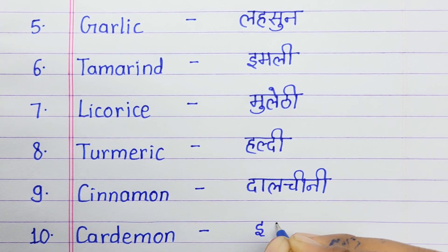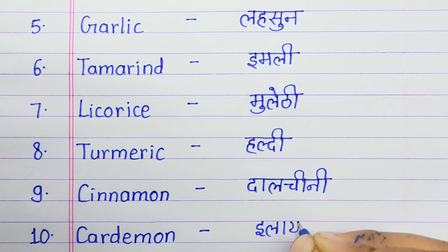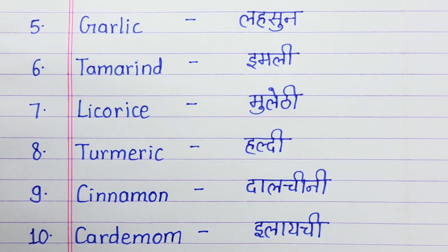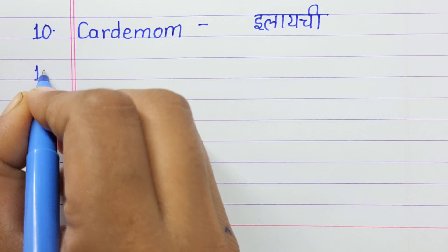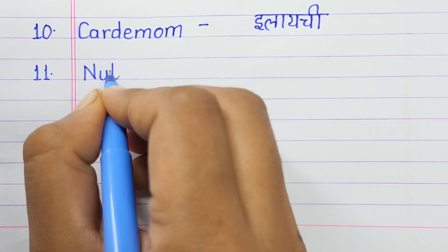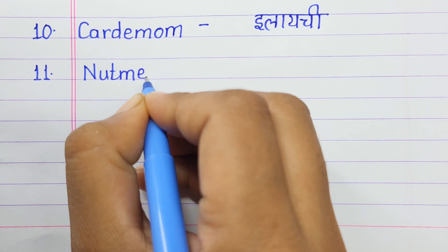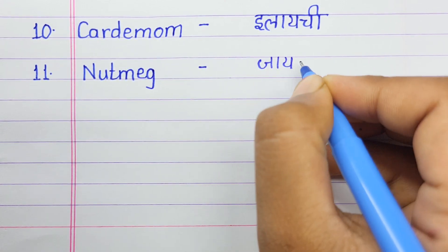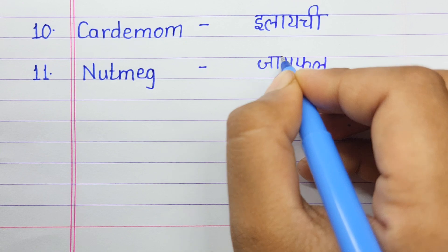Number ten: Cardamom means elige. Number eleven: Nutmeg means javitri.